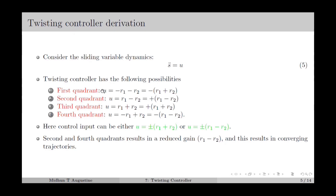Based on the sign of s and s-dot, the twisting controller has 4 different possibilities. In the first quadrant, both s and s-dot are positive, giving u equal to minus r1 minus r2. In the second quadrant, s is negative and s-dot is positive, giving u equal to r1 minus r2. In the third quadrant, both s and s-dot are negative, giving u equal to r1 plus r2. In the fourth quadrant, s is positive and s-dot is negative, giving u equal to minus r1 plus r2. The control input can therefore be either plus or minus r1 plus r2, or plus or minus r1 minus r2. The second and fourth quadrants result in a reduced gain, which is r1 minus r2, and this makes the trajectory converge in the case of the twisting controller.